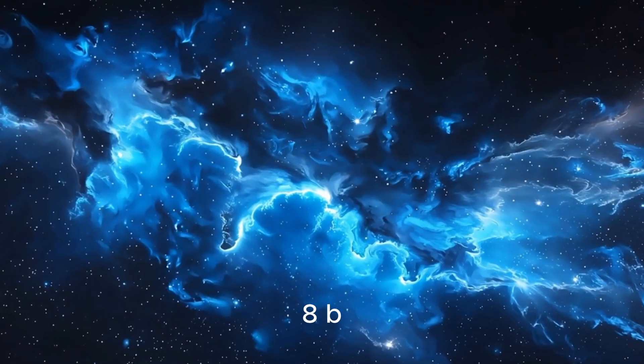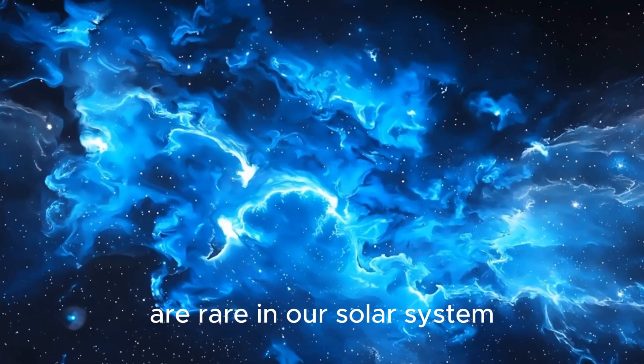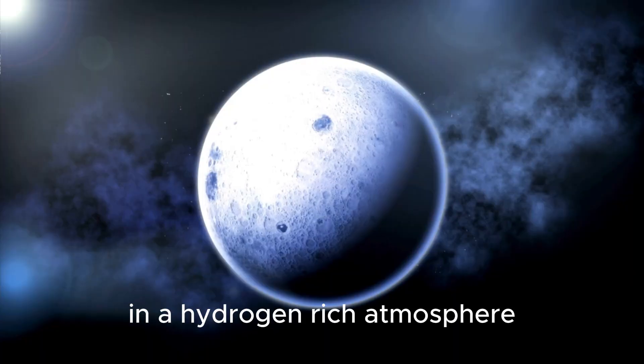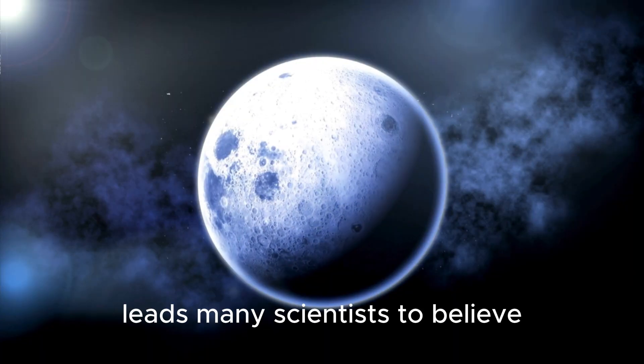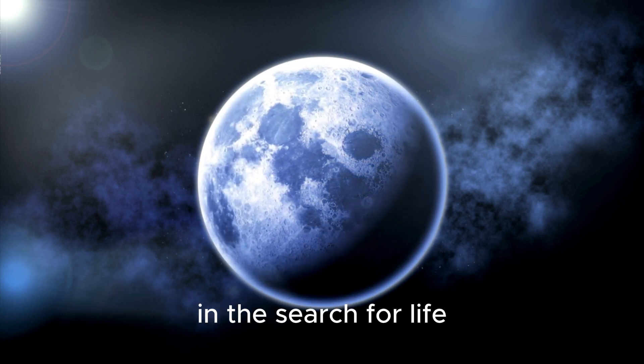Planets like K-18b, which fall between Earth and Neptune in size, are rare in our solar system, making them especially intriguing to astronomers. The presence of carbon molecules in a hydrogen-rich atmosphere leads many scientists to believe these types of planets may be strong candidates in the search for life.